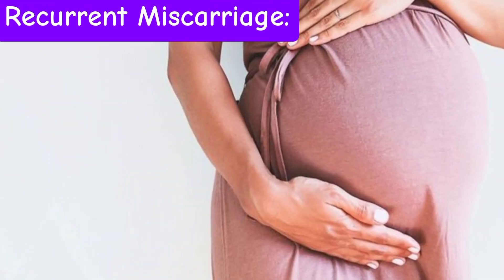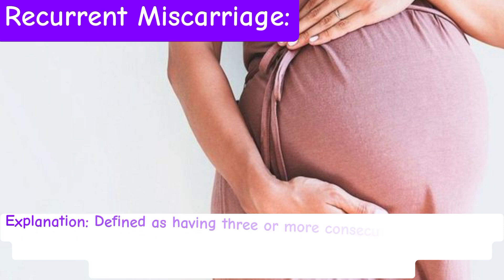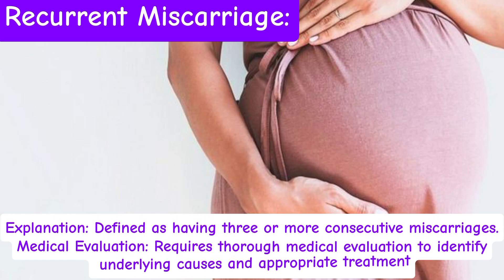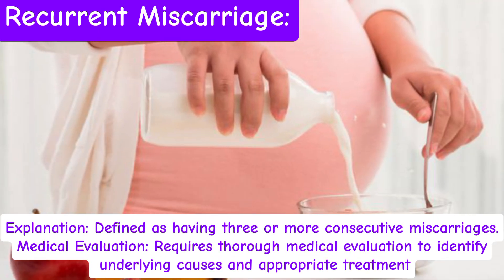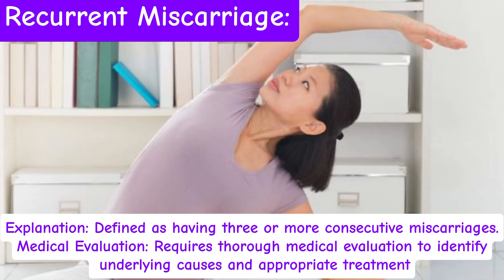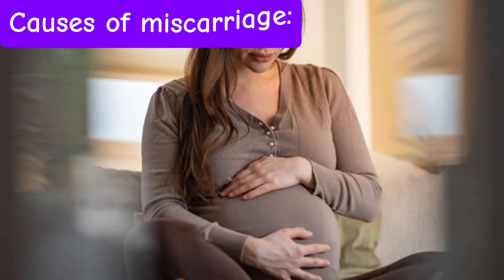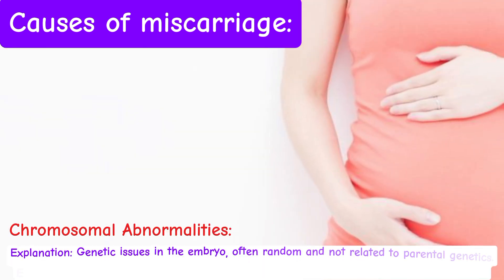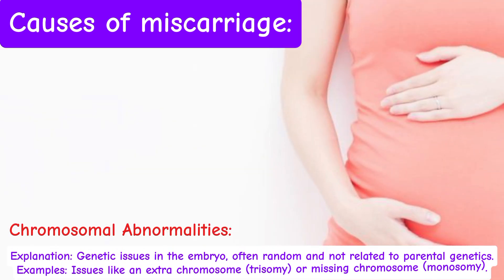Recurrent Miscarriage is defined as having three or more consecutive miscarriages. It requires thorough medical evaluation to identify underlying causes and appropriate treatment. Causes of miscarriage include chromosomal abnormalities — genetic issues in the embryo that are often random and not related to parental genetics.